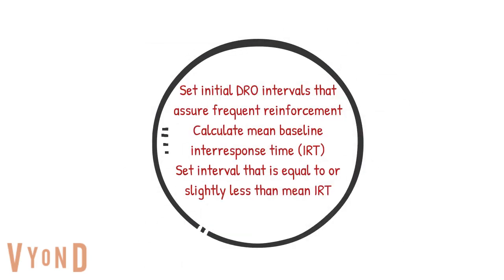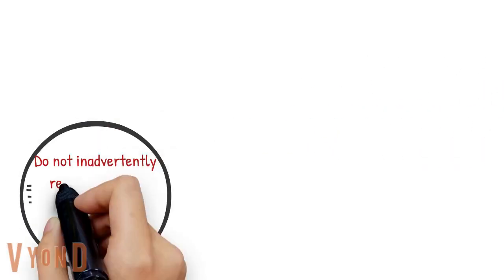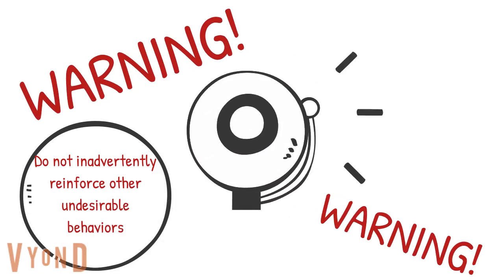It's very important to set intervals at appropriate times to ensure the learner will be successful. This depends on your baseline data. If a learner exhibits the behavior every two minutes, set the intervals to less than two minutes to ensure success, then gradually increase them. For example, with a patient who exhibited behavior every minute, intervals had to start very short and then increased throughout the day until the headbanging behavior decreased. Make sure you are not inadvertently reinforcing other undesirable behaviors — cover all problem behaviors in the criteria.